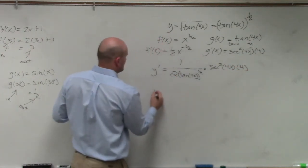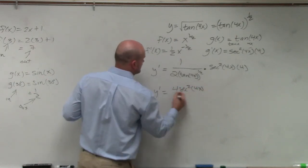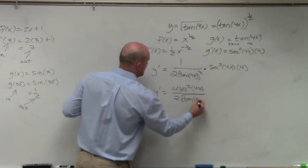And then let's write this prettier, 4 secant squared of 4x, all over 2, I'll use the square root, tangent of 4x.